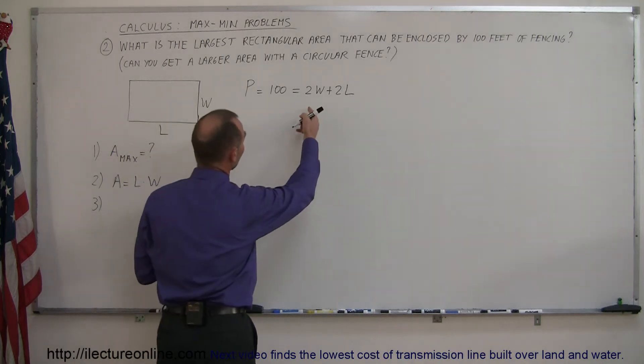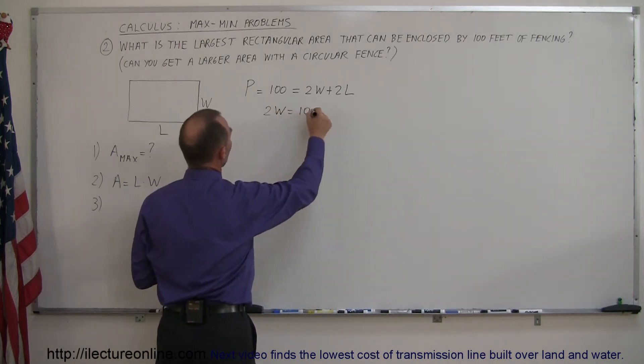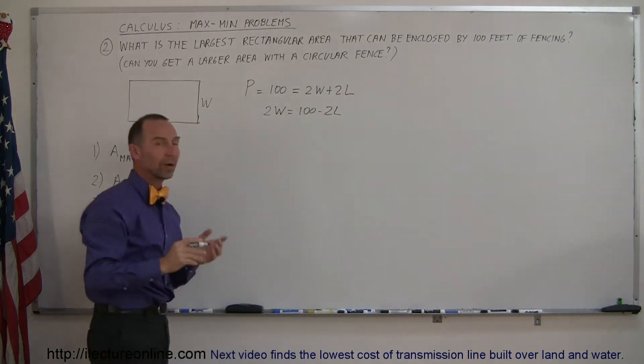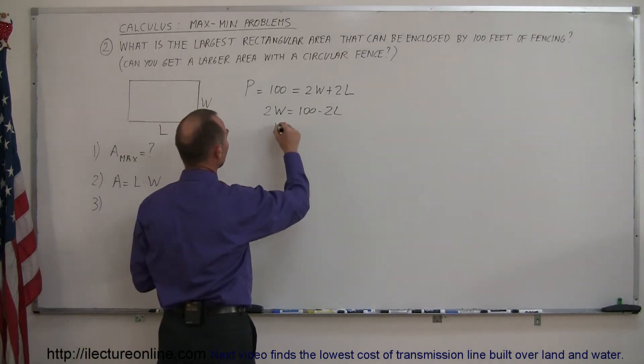So let's say we solve for W. So that means that 2W is equal to 100 minus 2L. When I move the 2L across the other side, I have 100 minus 2L, and I switch the equation around, dividing both sides by 2, I get W is equal to 50 minus L.